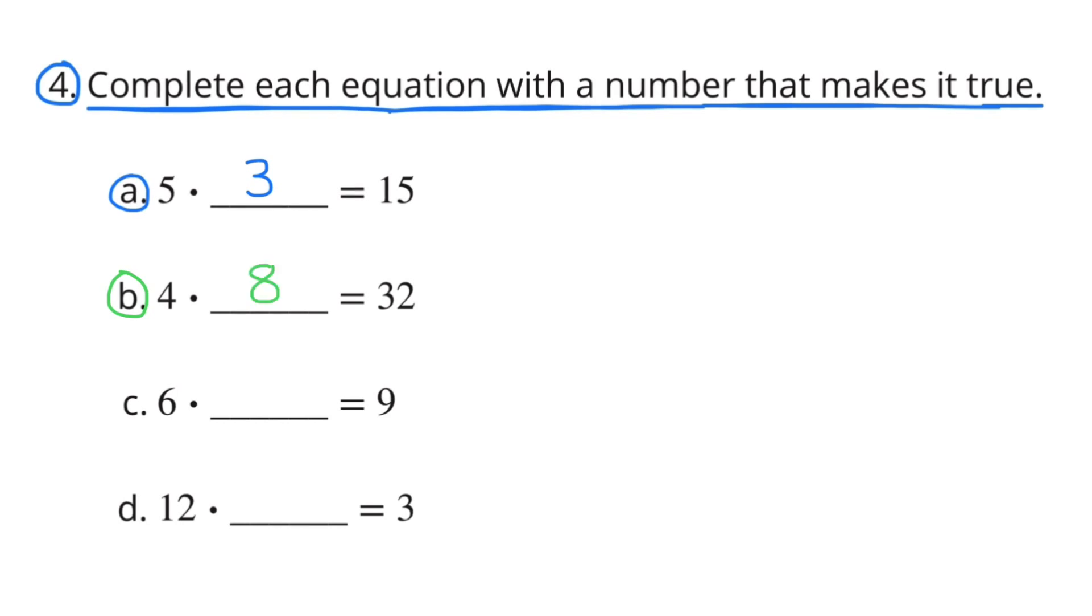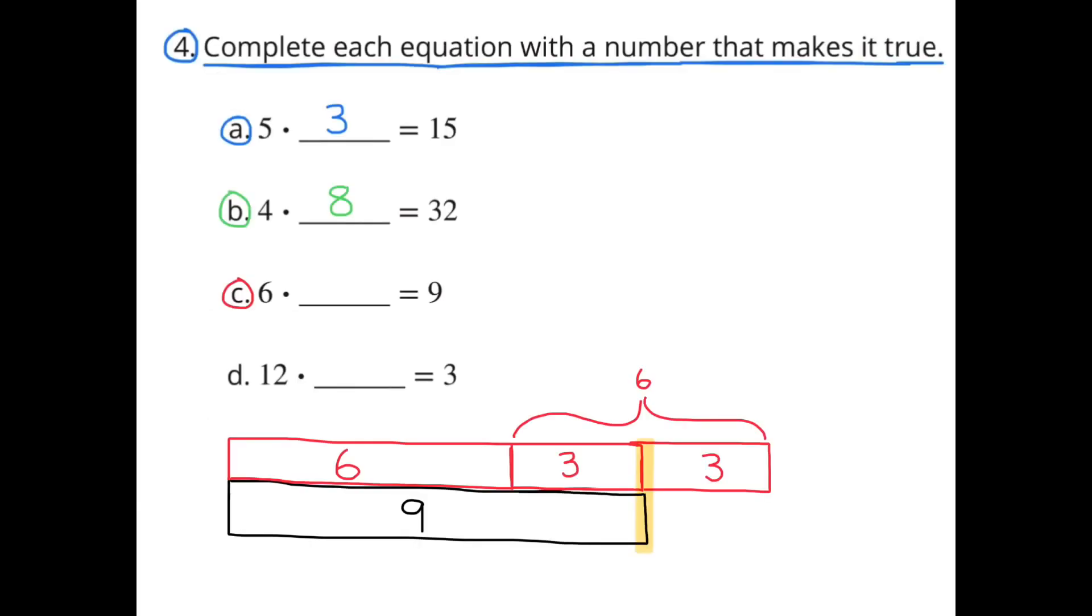C: 6 times what number equals 9? This illustration shows how 6 goes into 9 one and a half times. 3 is half of 6, and 3 goes into 9 three times.